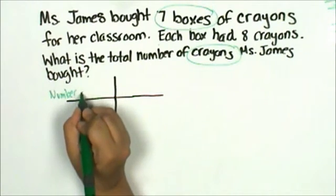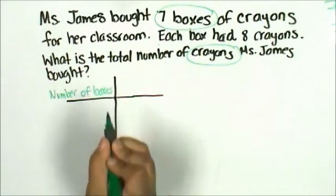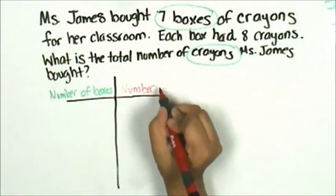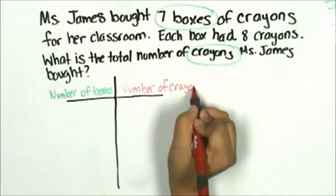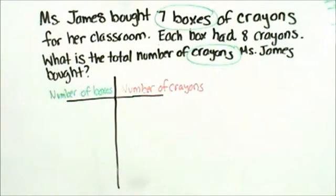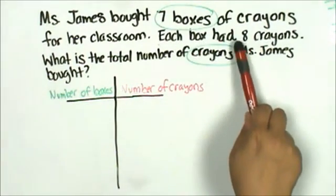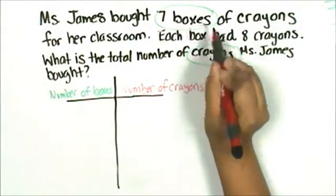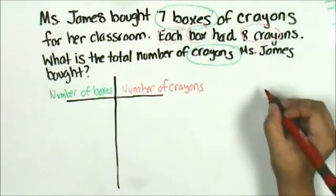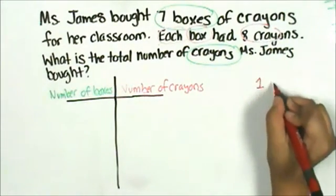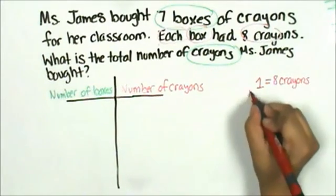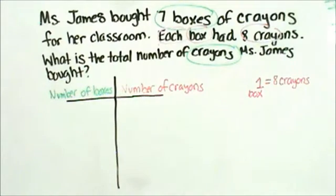This will be number of boxes, number of crayons. If I look at my problem, I see the following. Each box had eight crayons. Each box has eight crayons. That means one box has eight crayons. That's how I'll start my table.